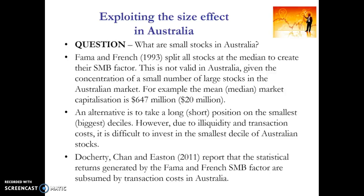Maybe we think about other academic studies, such as Fama and French, which split the universe at the median in half and identify the stocks below the median as being small cap. If we do this and look at the median market cap in Australia, that median market capitalisation is still around $20 million — still really small stocks that we can't feasibly invest in. Even the middle stock in terms of market capitalisation in Australia is too small for an institutional investor to buy. So we can't really feasibly exploit the size effect using the bottom half of stocks by size in the Australian market.